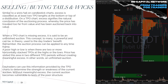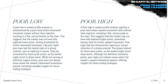Day traders can use this information to determine the strength or weakness of the current auction. Without meaningful excess, the auction becomes vulnerable to testing that poor structure. For example, on that day you see an unfinished auction with a poor high — missing excess — and on the next day price creates that excess, leaves a selling tail, then pushes back down. A poor low in market profile is characterized by a flat bottom where downward movement ceases without clear rejection, indicating a lack of strong reversal — and that area is typically revisited.